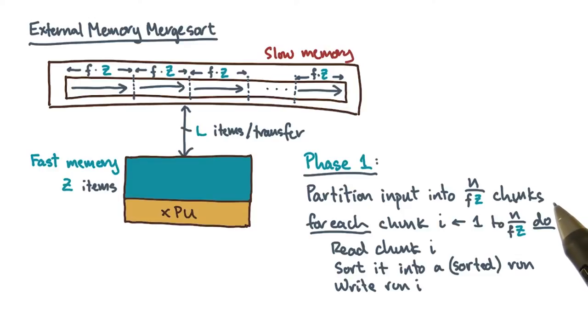Again, that's partition the input into approximately z-sized chunks. And then for each chunk, you read a chunk, sort it, and write it back.